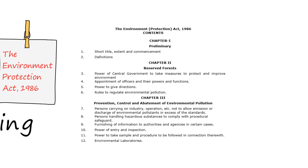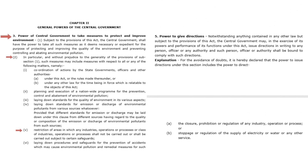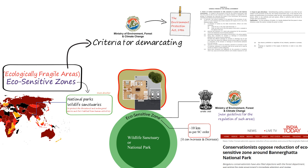When you look at the Environment Protection Act of 1986, Chapter 2 — General Powers of the Central Government — Section 3 says 'Power of Central Government to take measures to protect and improve the environment.' Within that, Subsection 2, Clause 5 says 'Restriction of areas in which any industries, operations or processes or class of industries, operations or processes shall not be carried out or shall be carried out subject to certain safeguards.' Then Section 5, Clause A says the Central Government can give direction for the closure, prohibition or regulation of any industry, operation or process. With the help of these two sections, the Central Government pushes the idea to create eco-sensitive zones. The same criteria have been used to declare no-development zones near the bank of river Ganga and its tributaries.